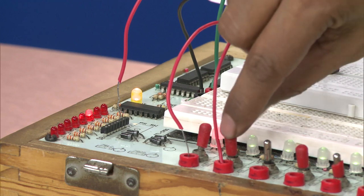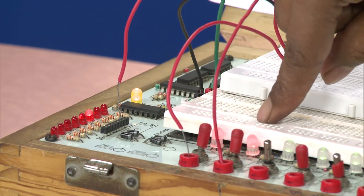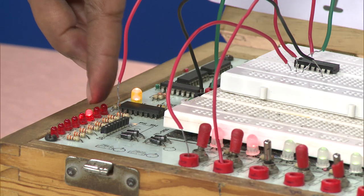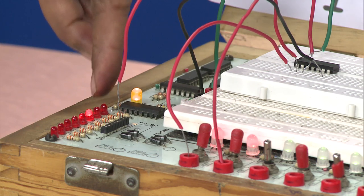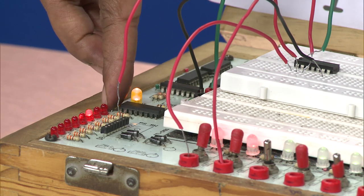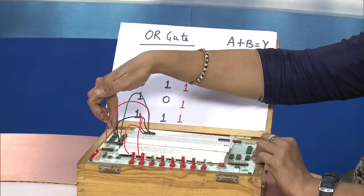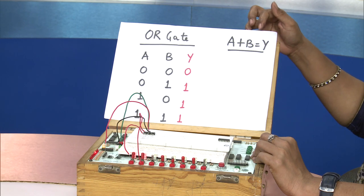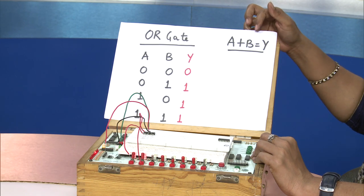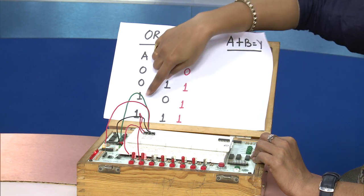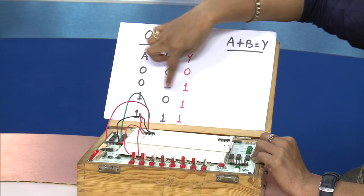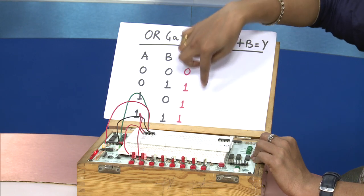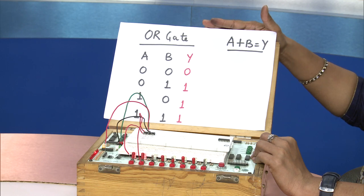When both A and B here go to 1, again the output LED glows indicating that the output is 1. So in case of the OR gate, what we see is that the Boolean expression is given as A plus B equals Y. So for A and B both going to 1 or any one going to 1, the output is realized as 1. This is the working of the OR gate.